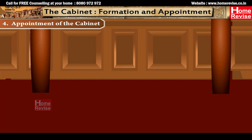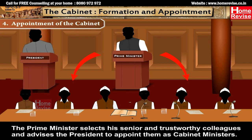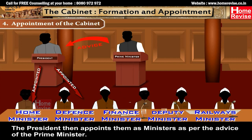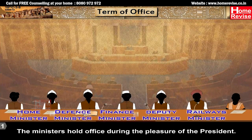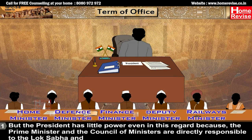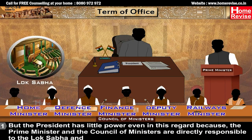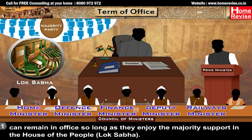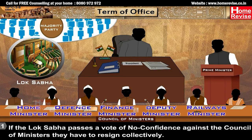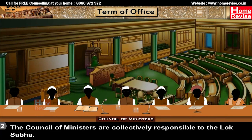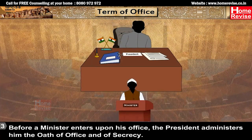The Prime Minister selects his senior and trustworthy colleagues and advises the President to appoint them as Cabinet Ministers. The President then appoints them as per the advice of the Prime Minister. Ministers hold office during the pleasure of the President, but the President has little power in this regard because the Prime Minister and the Council of Ministers are directly responsible to the Lok Sabha and can remain in office so long as they enjoy majority support. If the Lok Sabha passes a vote of no confidence against the Council of Ministers, they have to resign collectively. The Council of Ministers are collectively responsible to the Lok Sabha. Before a Minister enters office, the President administers the Oath of Office and of Secrecy.